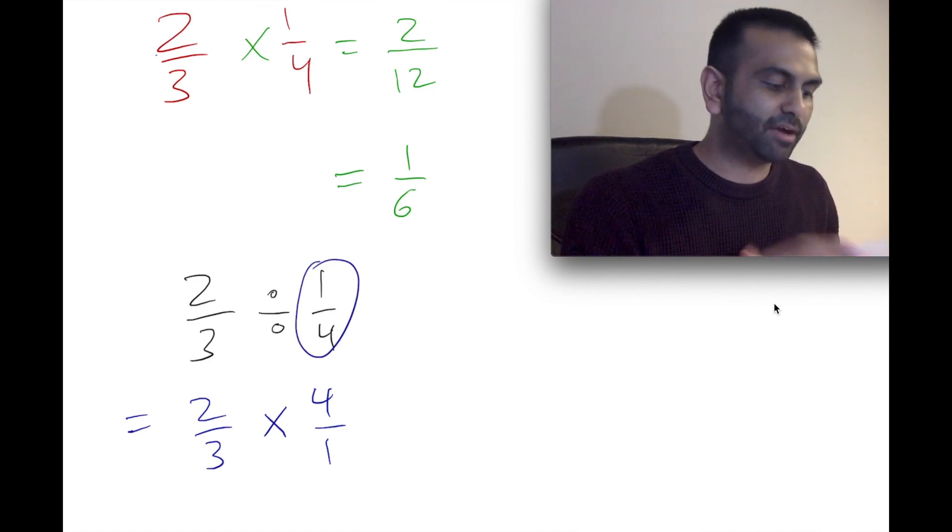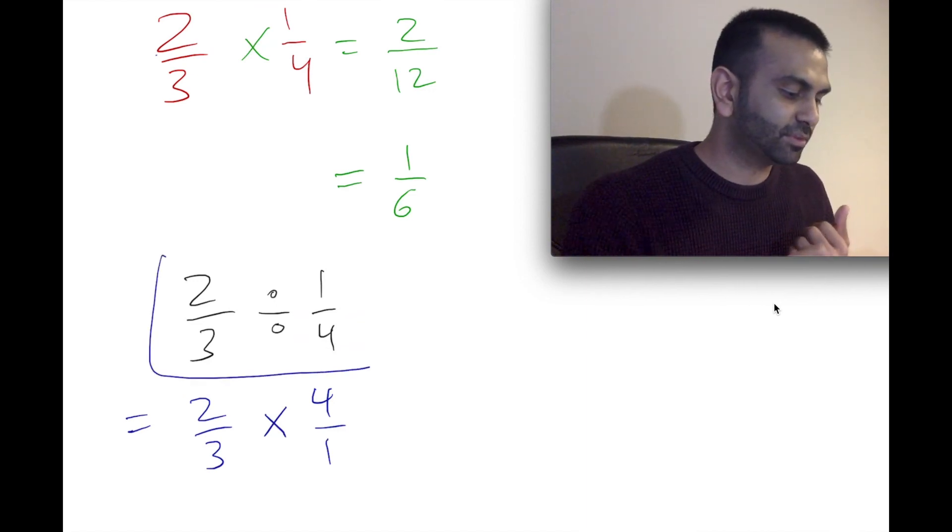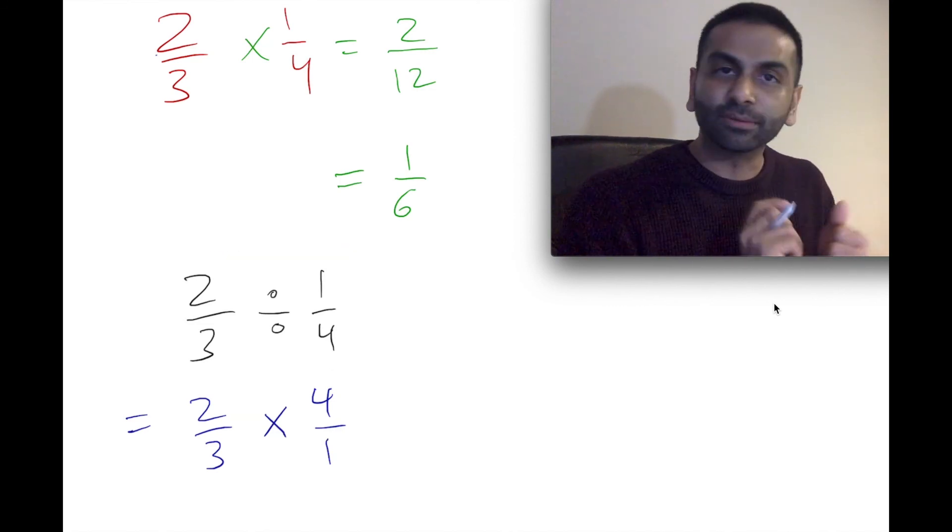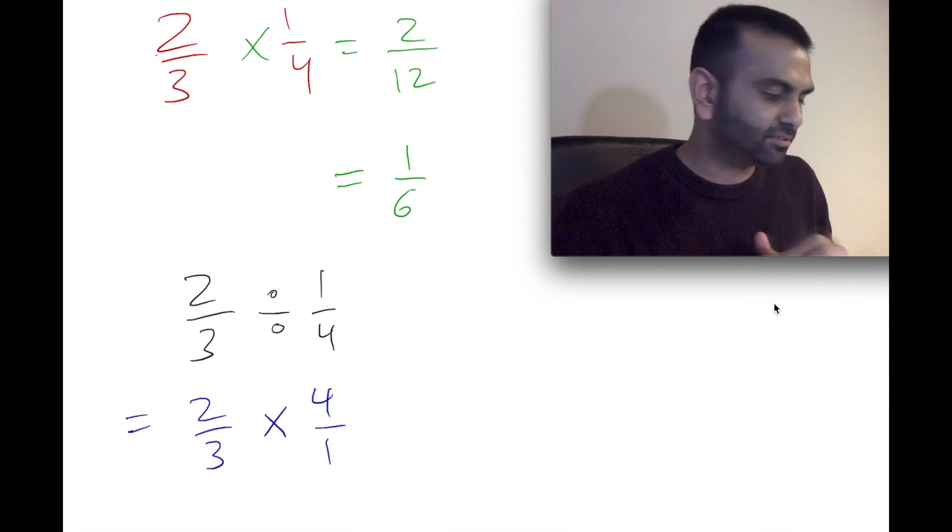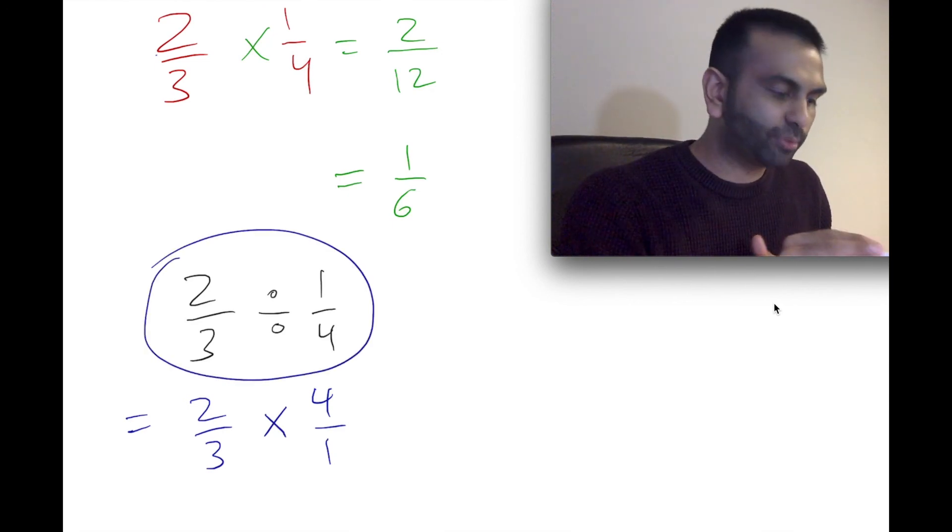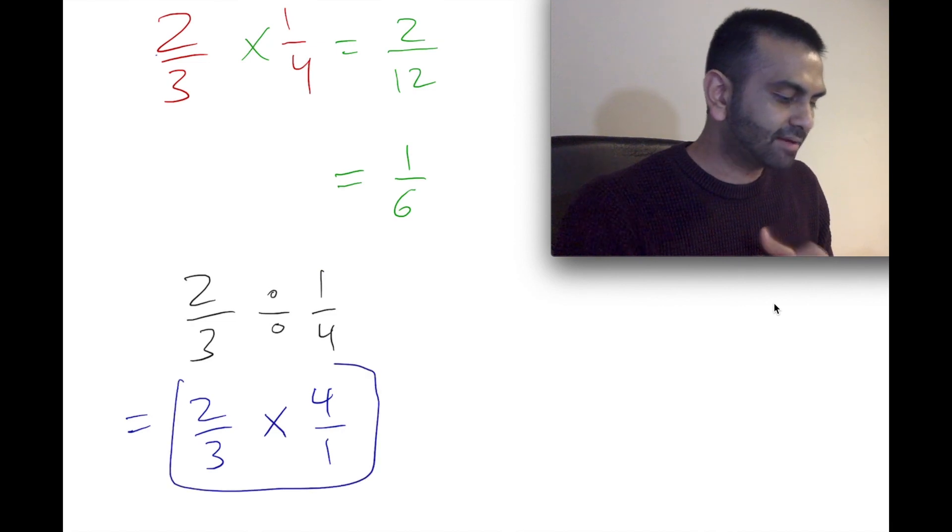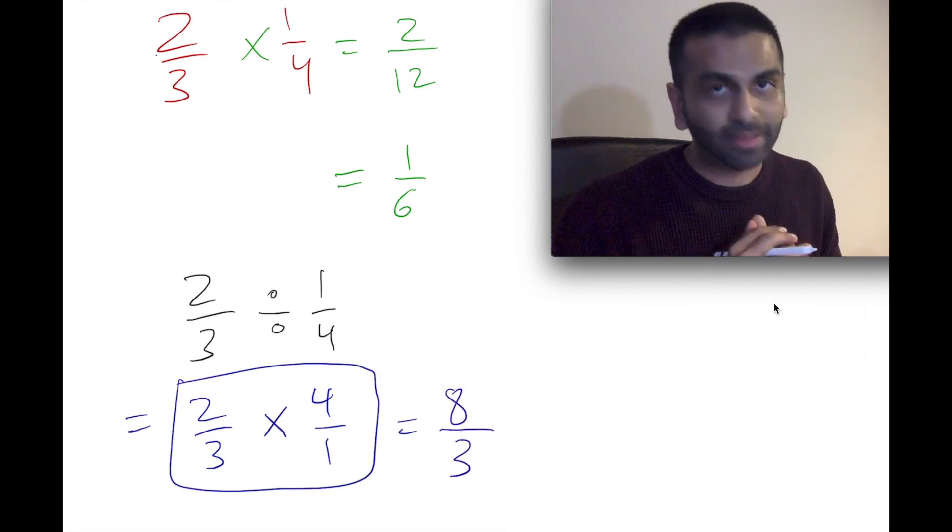Now, the order doesn't matter in multiplying, but it does in division, right? So if you're doing A divided by B, you've got to basically take the reciprocal of B, the second thing. So here, 2/3 divided by 1/4 means you're going to flip specifically the 1/4. But once you do that, then you multiply. And so that's going to then be 2 times 4 is 8 in the numerator, 3 times 1 is 3 in the denominator, and that's your answer.